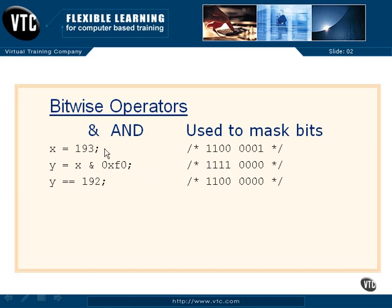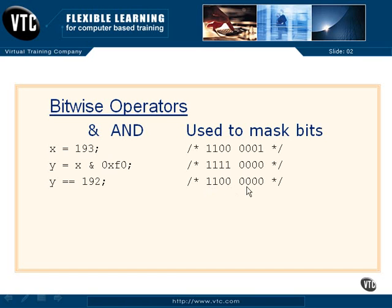If we AND these together, the only bits that come through are the ones where both the original value and the mask have a bit set. The low-order nibble bits in the mask are zero, so those don't come through. We only get whatever bits were set in the high-order nibble of 193. So ANDed with F0, our result is 192, which is 128 plus 64 — those two high-order bits. That's a bitwise AND.